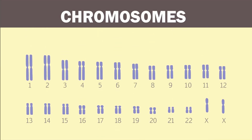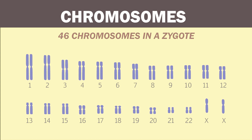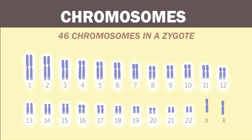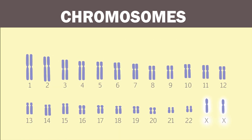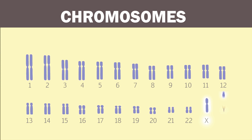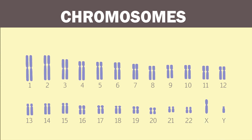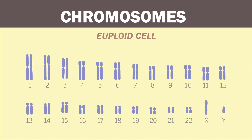When the process of meiosis works correctly, the two gametes come together to form a zygote with 46 chromosomes — 22 paired numbered chromosomes called the autosomal chromosomes, and two sex chromosomes paired as either XX in females or XY in males. A correctly formed zygote with 46 chromosomes is called a euploid cell.